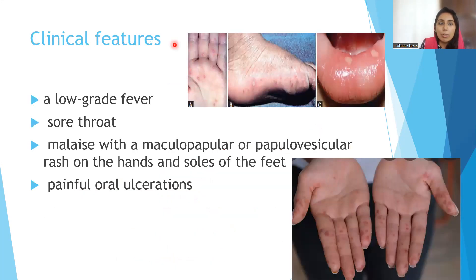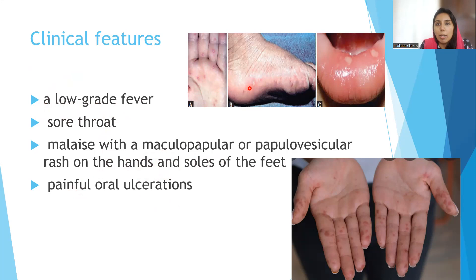The clinical features include low-grade fever, sore throat, and malaise with maculopapular or papulovesicular rash on the hands and feet. The name is self-explanatory — lesions appear in the hand, foot, and mouth. Children are often brought to the OPD with complaints of irritability and crying at night. With the onset of lesions, they may have severe itchiness. Parents notice small lesions on their child's hands and feet the next day.